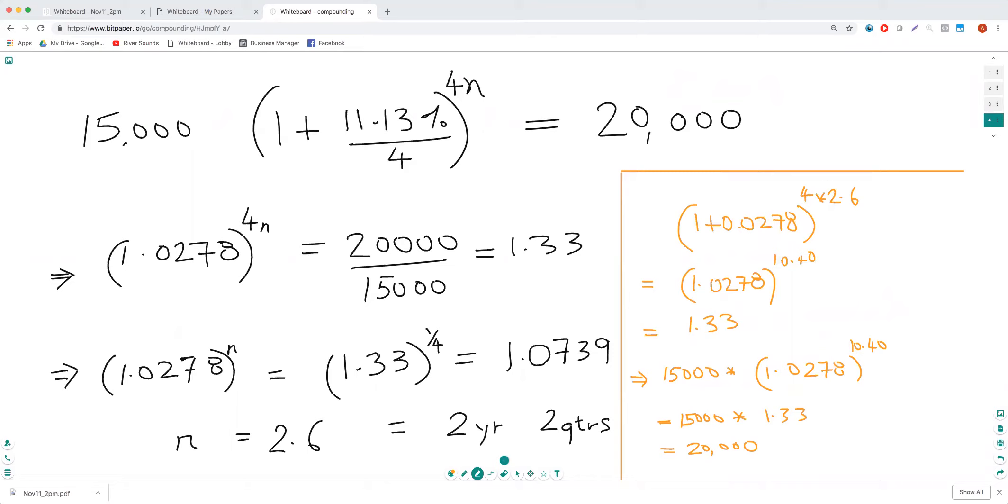n is the number of years, and that's 2.6. So we've got 1.0278 raised to 10.40, and that's 4 times 2.6. And then you can check the answer is 1.33. So 15,000 times this compounding term equals 15,000 times 1.33, and that's 20,000.